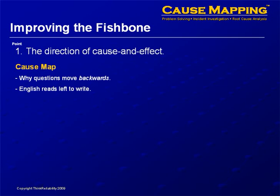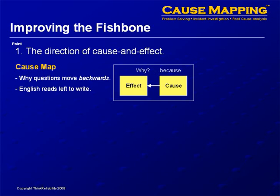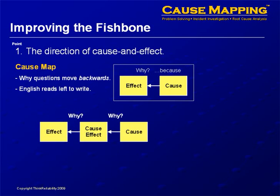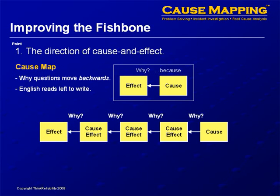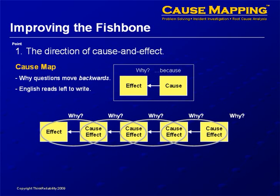As you ask why questions moving to the right, as you read across the page, the cause and effect relationship would have the effect on the left with the cause on the right. When you link these cause and effect relationships together with why questions, this is how you get a chain of events. The five whys is just a great way to think about cause and effect relationships and how they connect. You'd be starting with the problem or the negative effect over on the left, and then asking why questions as you read across the page. So the arrows on a cause map point to the left, because that is the direction that time goes.